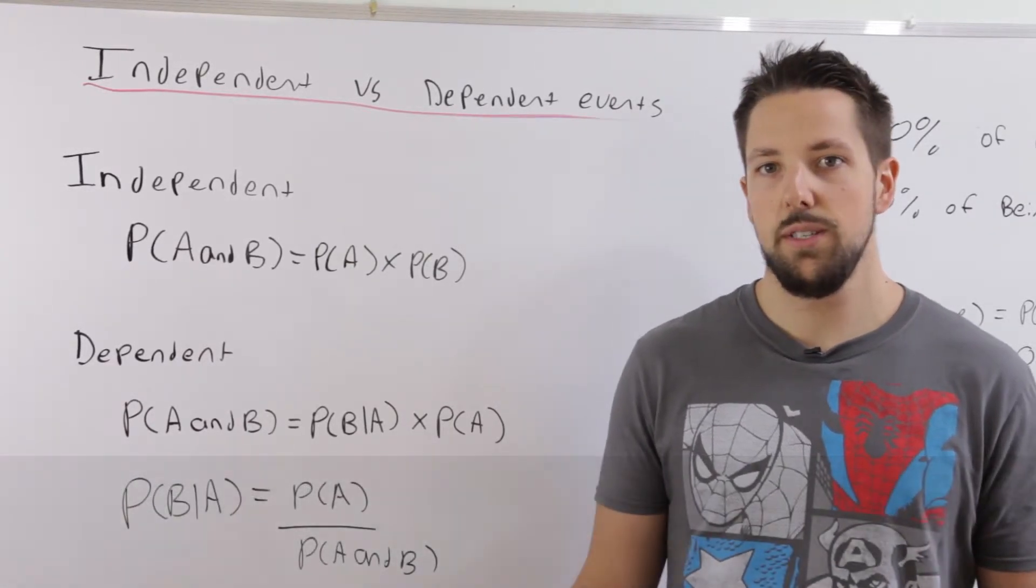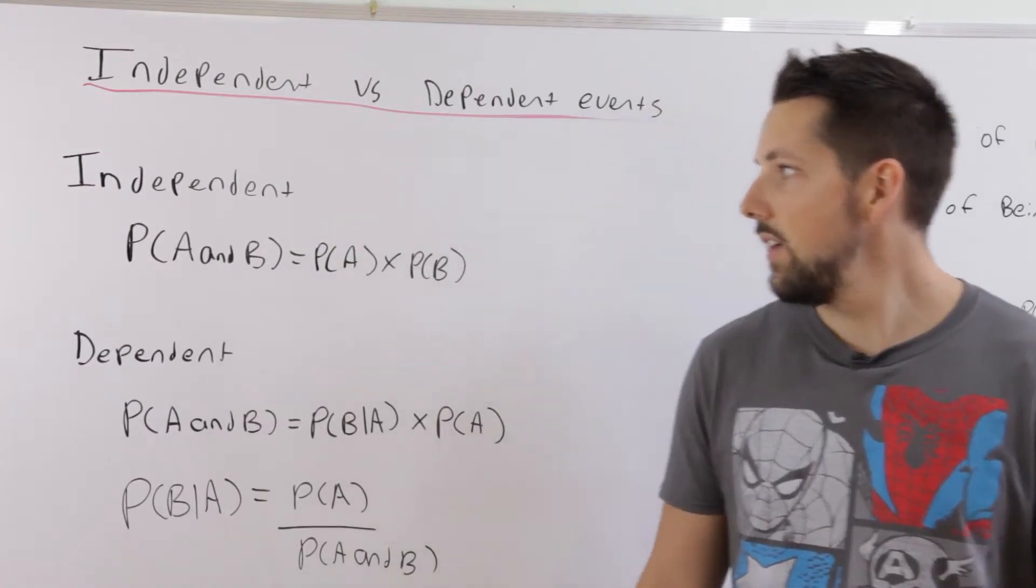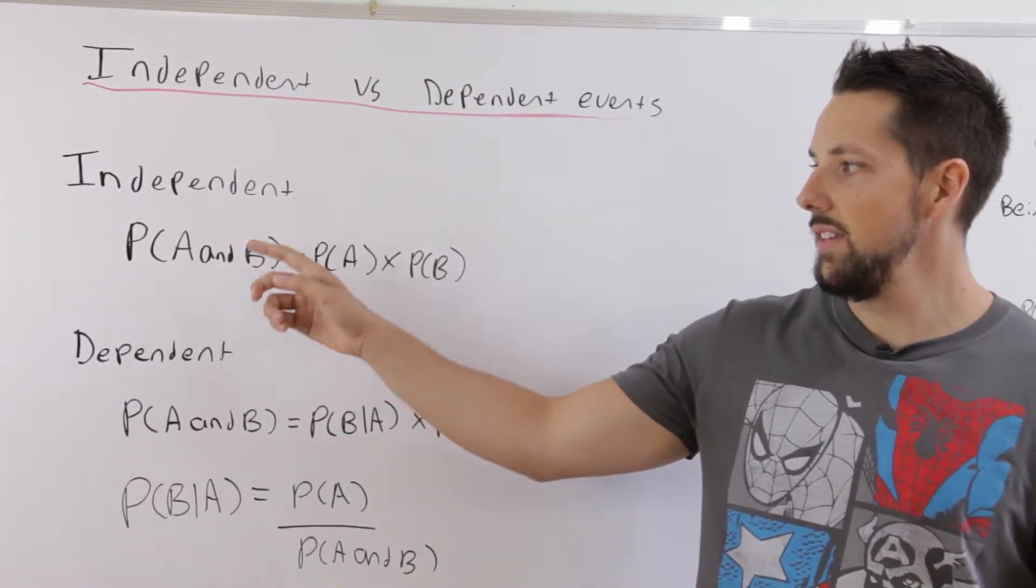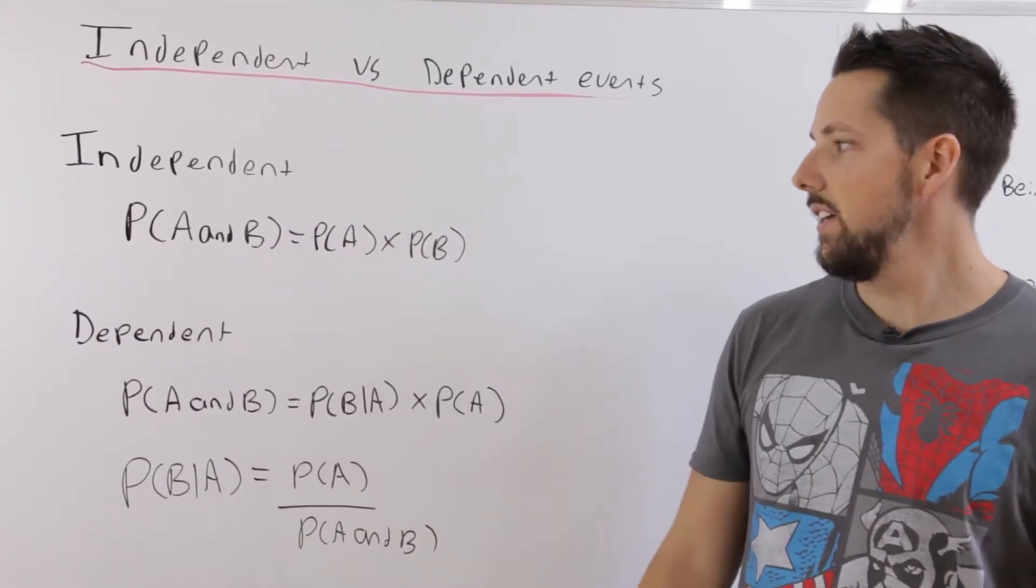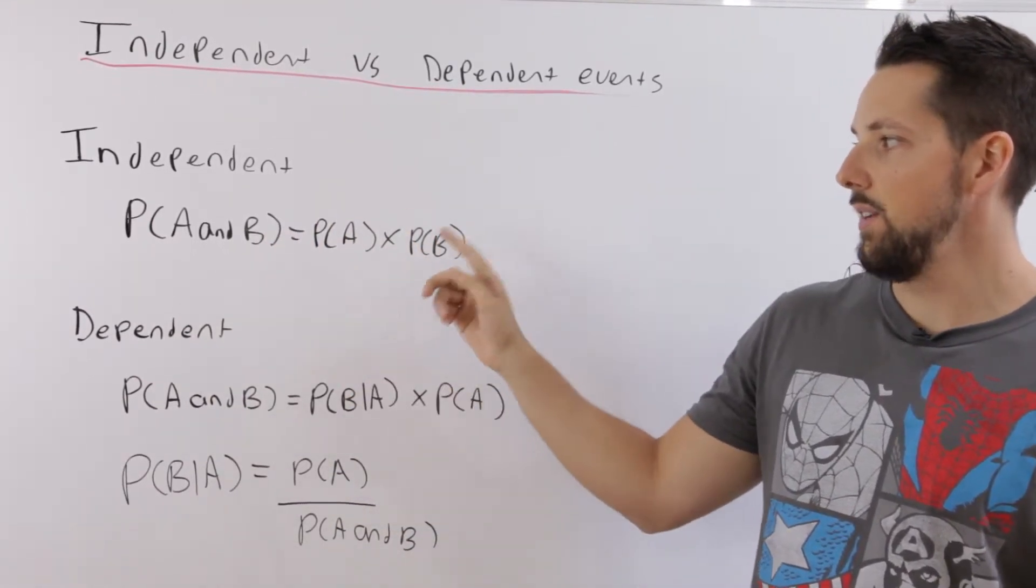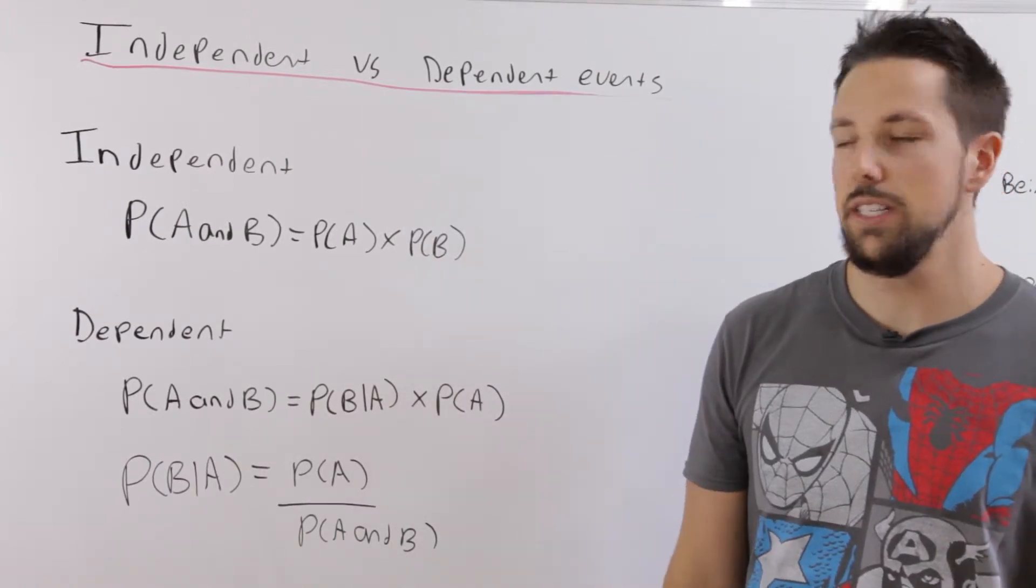The two formulas for independent and dependent events are here. To find the probability of event A and event B occurring if they're independent, you multiply the probability of event A times the probability of event B. It's pretty straightforward.